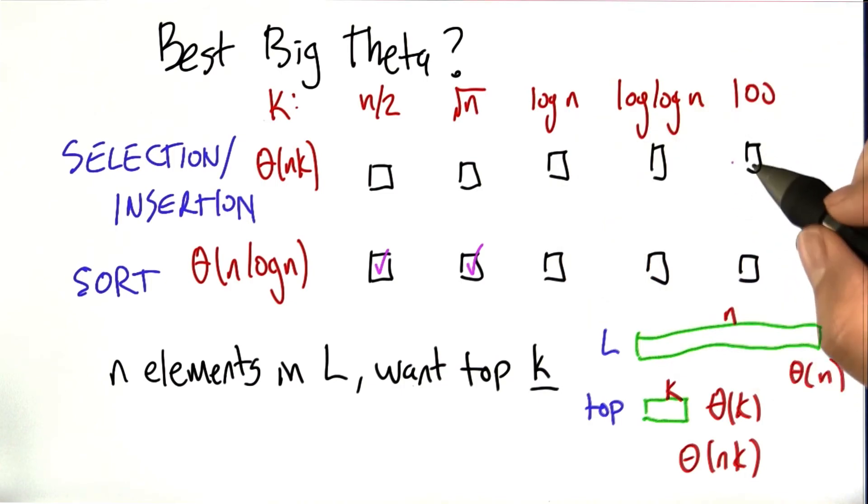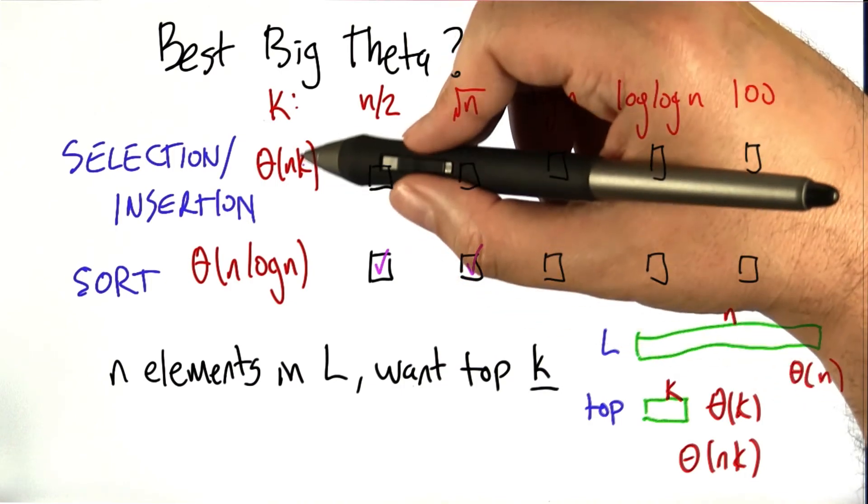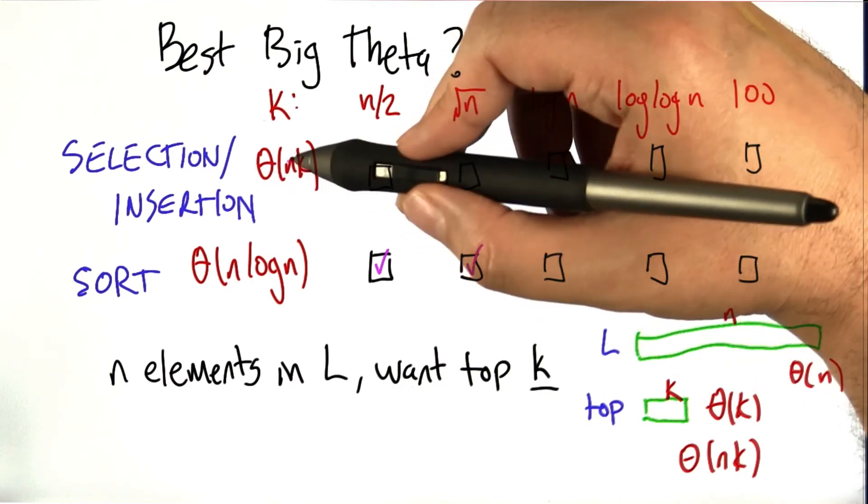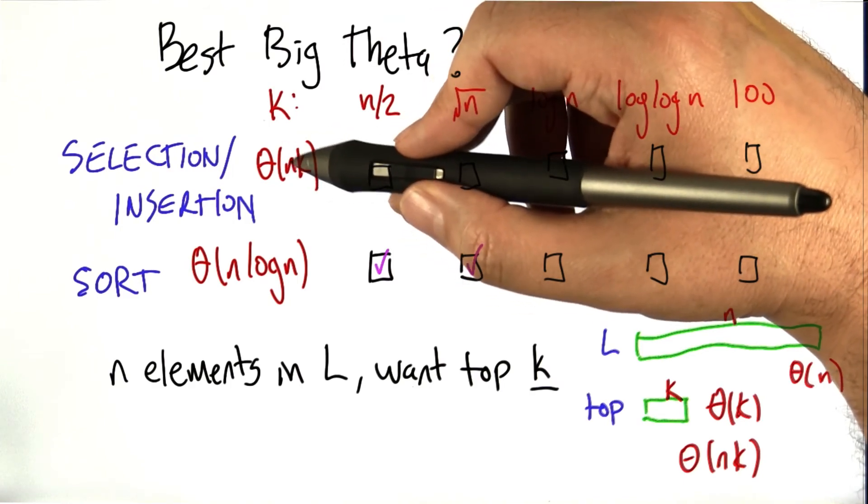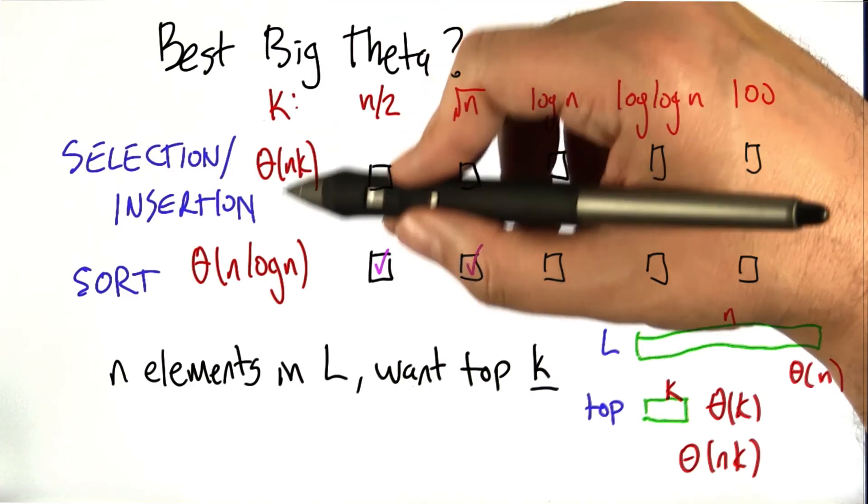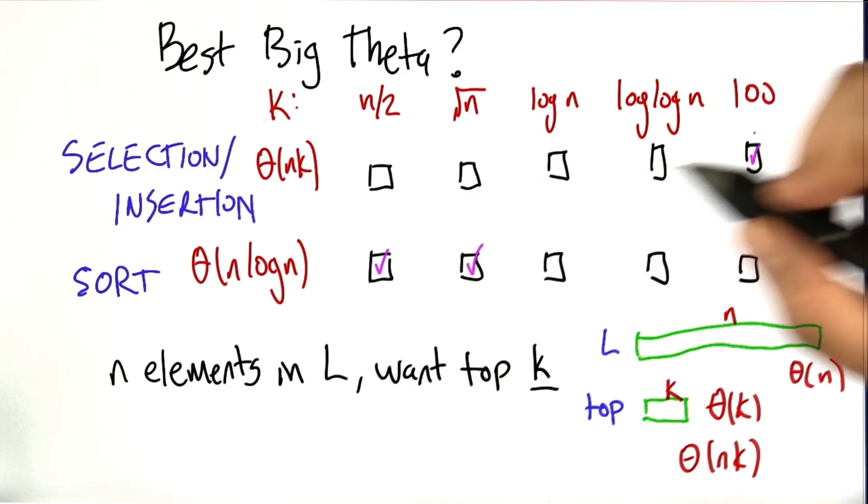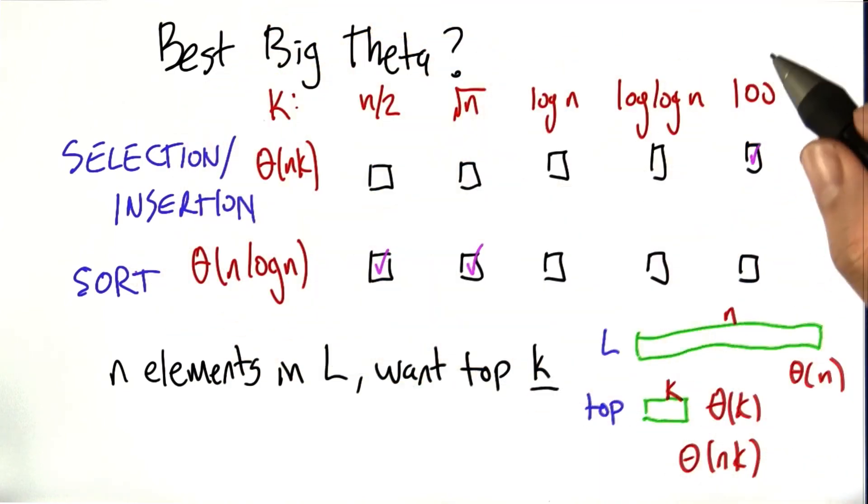Let's go to the other side of the spectrum. What if there's 100 elements in the list? Well, if k is a constant, k is 100, then the big theta of this is just big theta of n. It's linear time. So linear beats n log n. So definitely want to choose these algorithms over sorting if it's a small number of elements that you want to know.